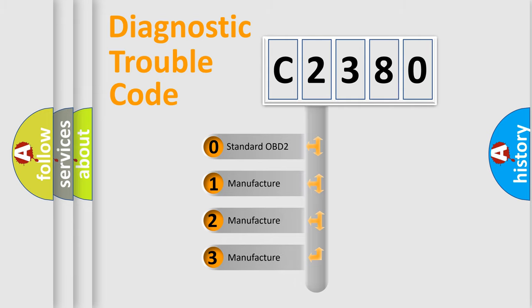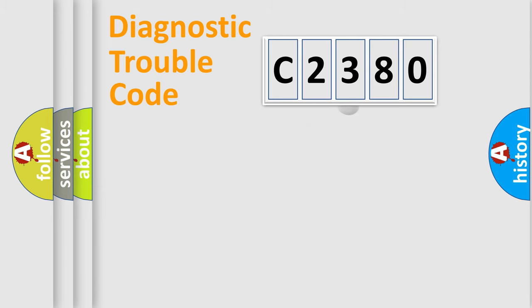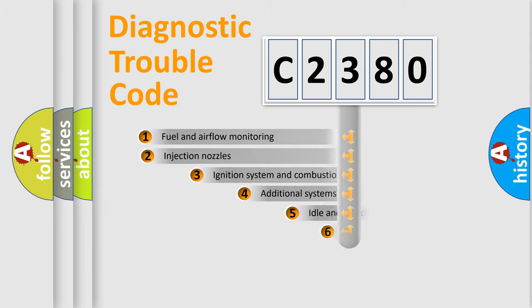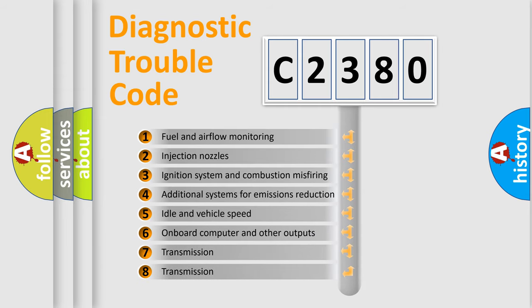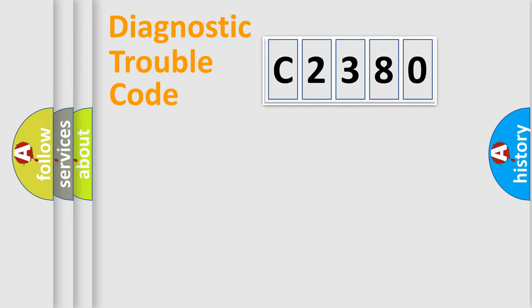If the second character is expressed as zero, it is a standardized error. In the case of numbers 1, 2, or 3, it is a more specific expression of a car-specific error. The third character specifies a subset of errors.